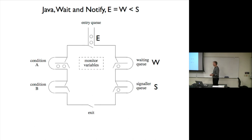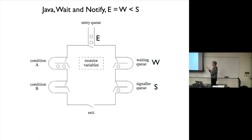Now here's something many people don't appreciate well: this is Java. Java's mechanism is called wait and notify, and its precedence is E equals W — less than S. That means if someone is in the waiting queue and someone is also in the entry queue, they have equal precedence. If you've been waiting inside, you have to contend with brand-new arrivals trying to get in for the very first time.